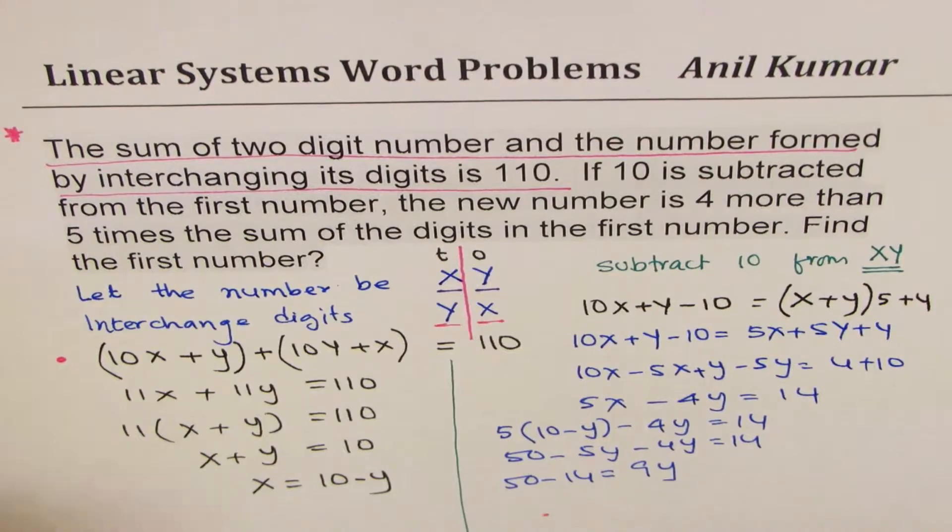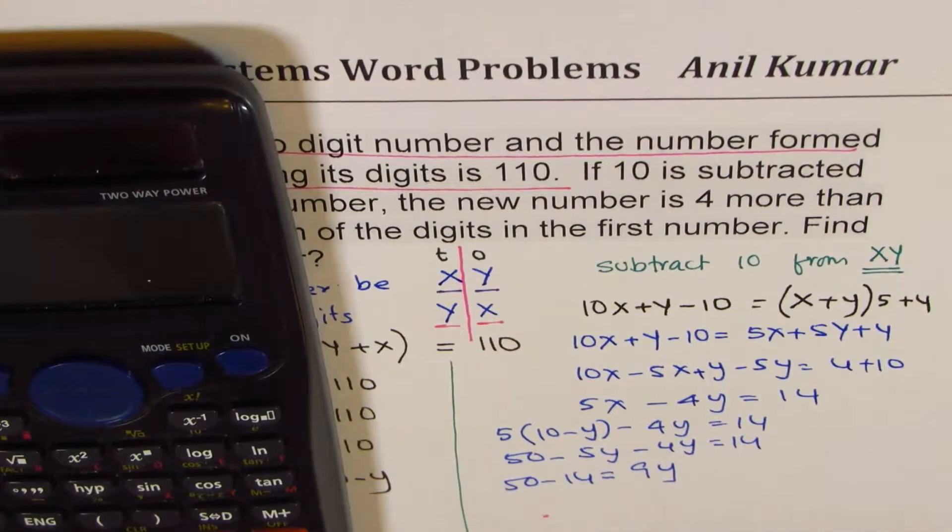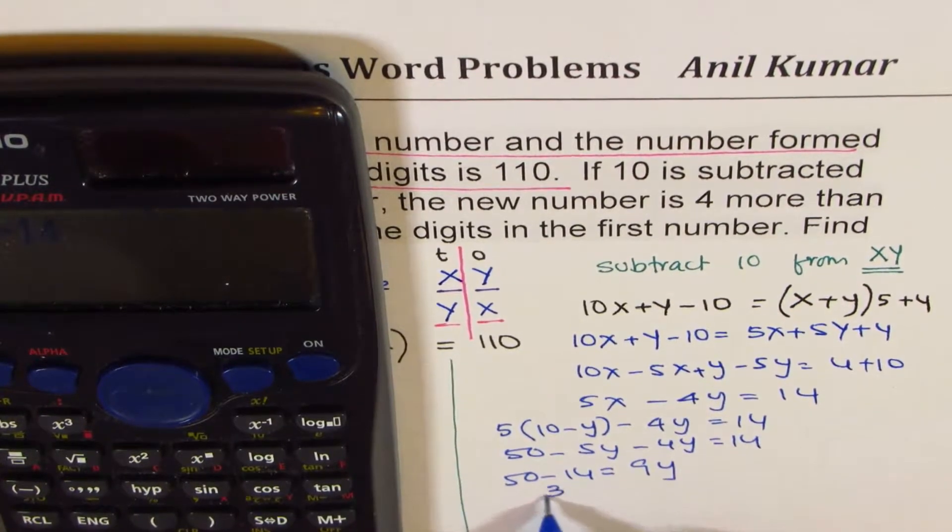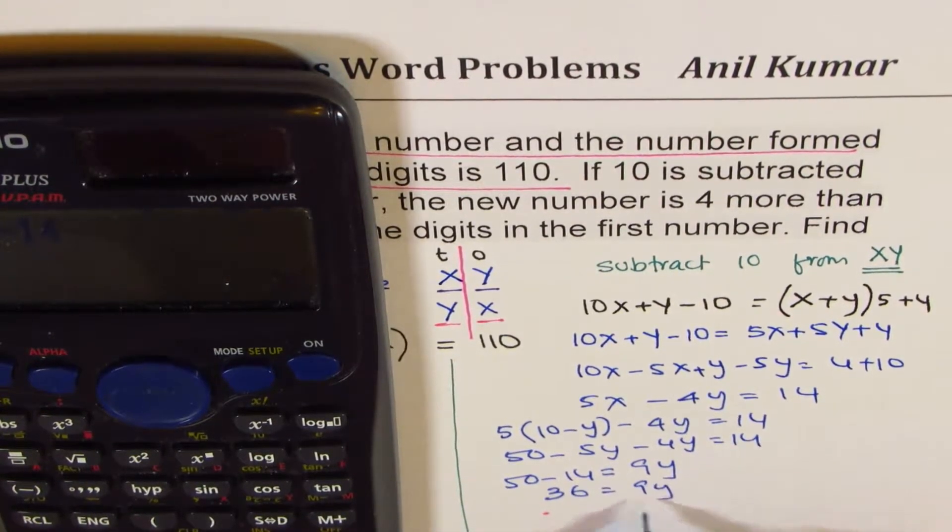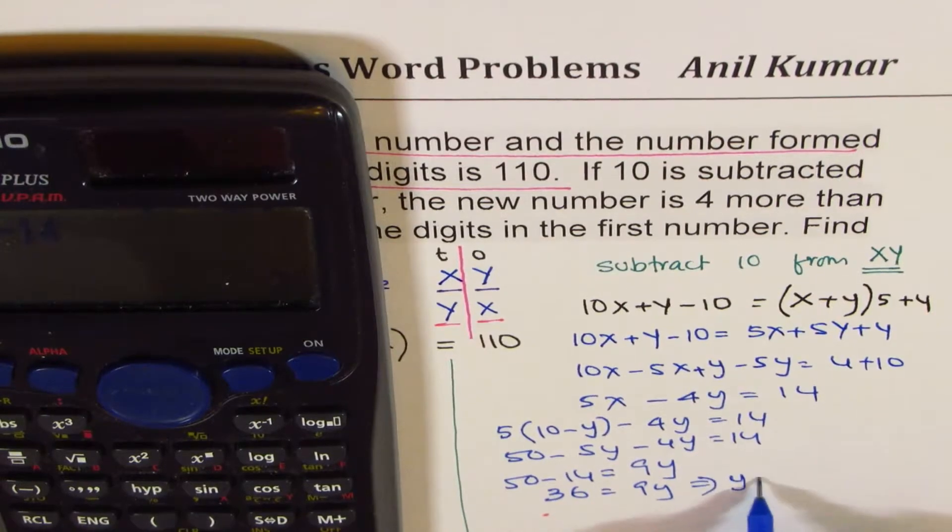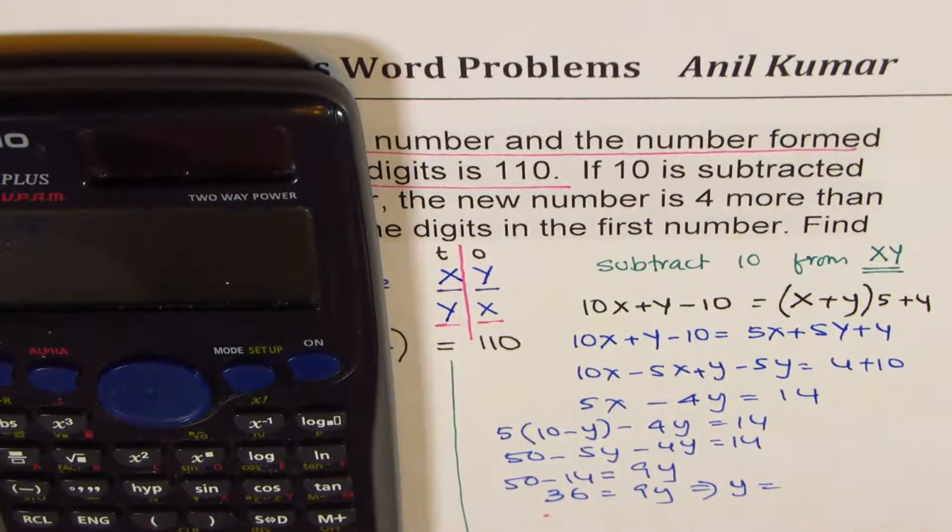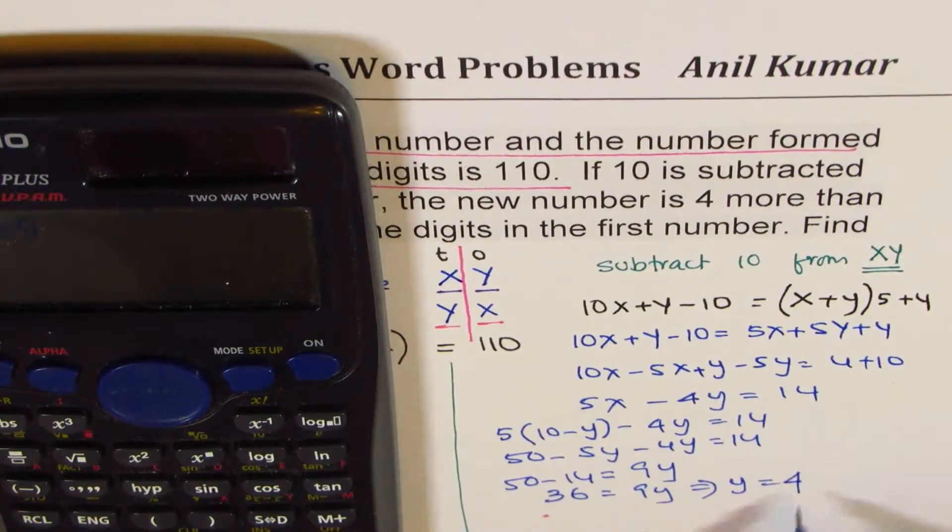Now, so 50 minus 14 is equals to 36, so 36 equals to 9y, and that gives you y equals to 36 divided by 9, which is 4.